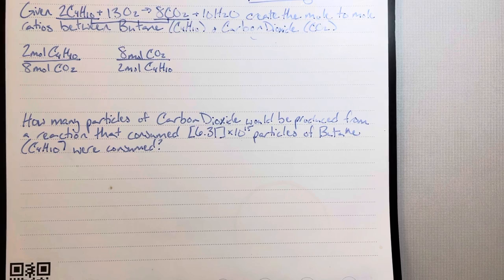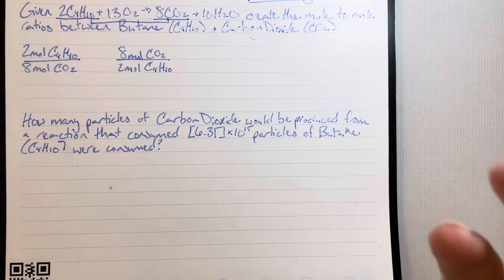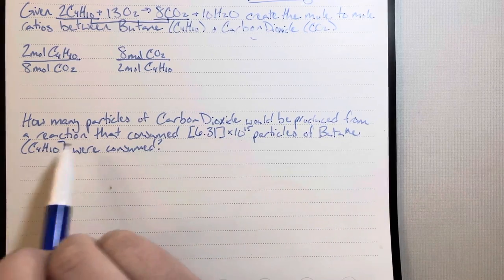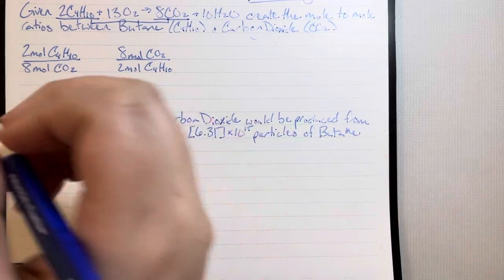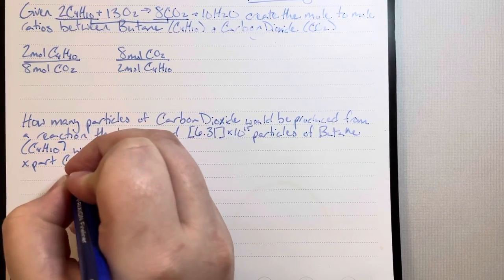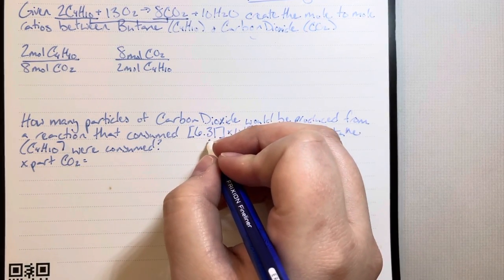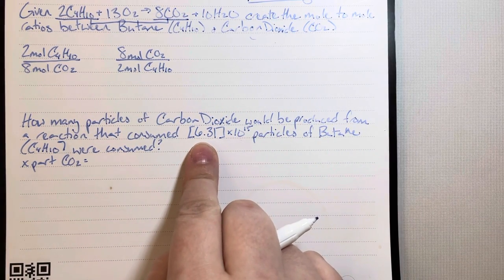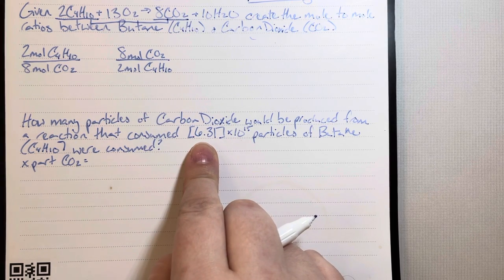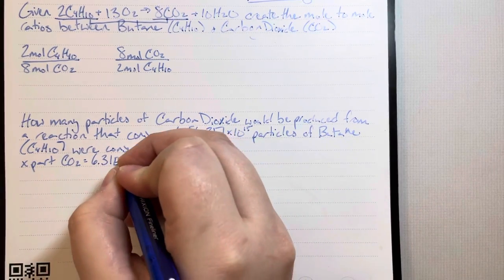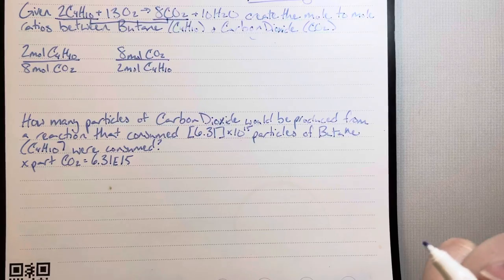How many particles of carbon dioxide would be produced from a reaction that consumed 6.31 times 10 to the 15th particles of butane C4H10? I'll translate this into my math problem: x particles CO2 equals 6.31E15 particles of butane. Note that my 6.31 is in brackets because my number could be different than yours, but the steps are the same regardless. The E takes the place of the times 10 and the caret.